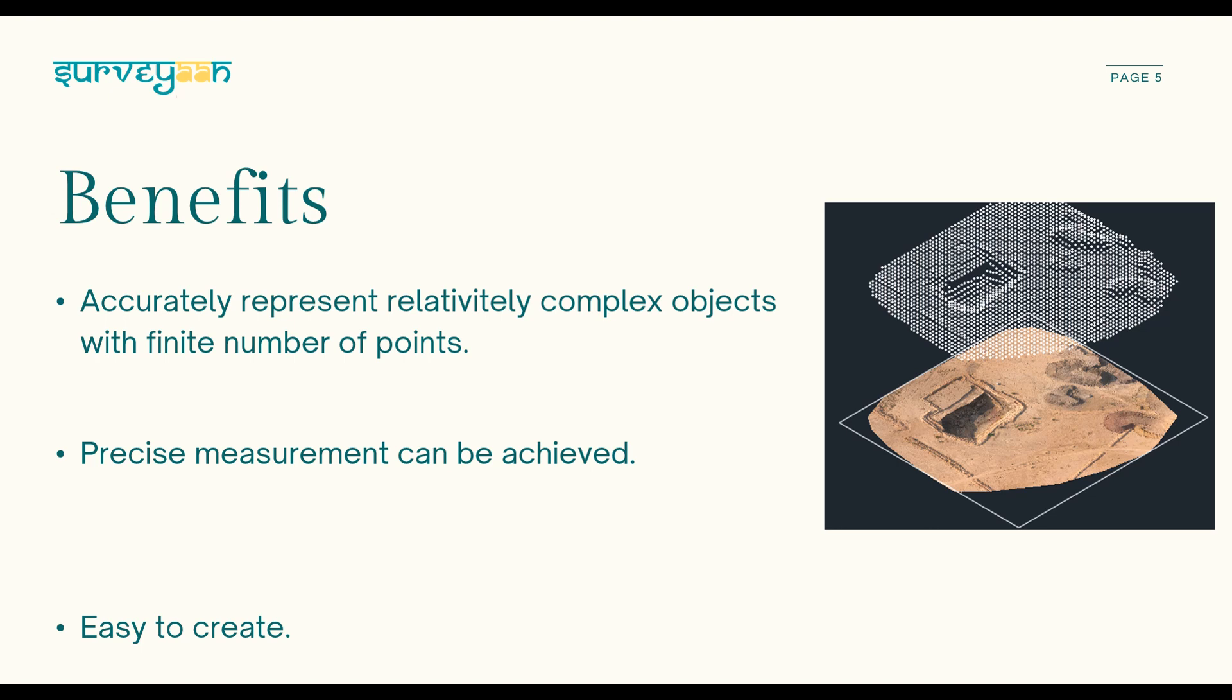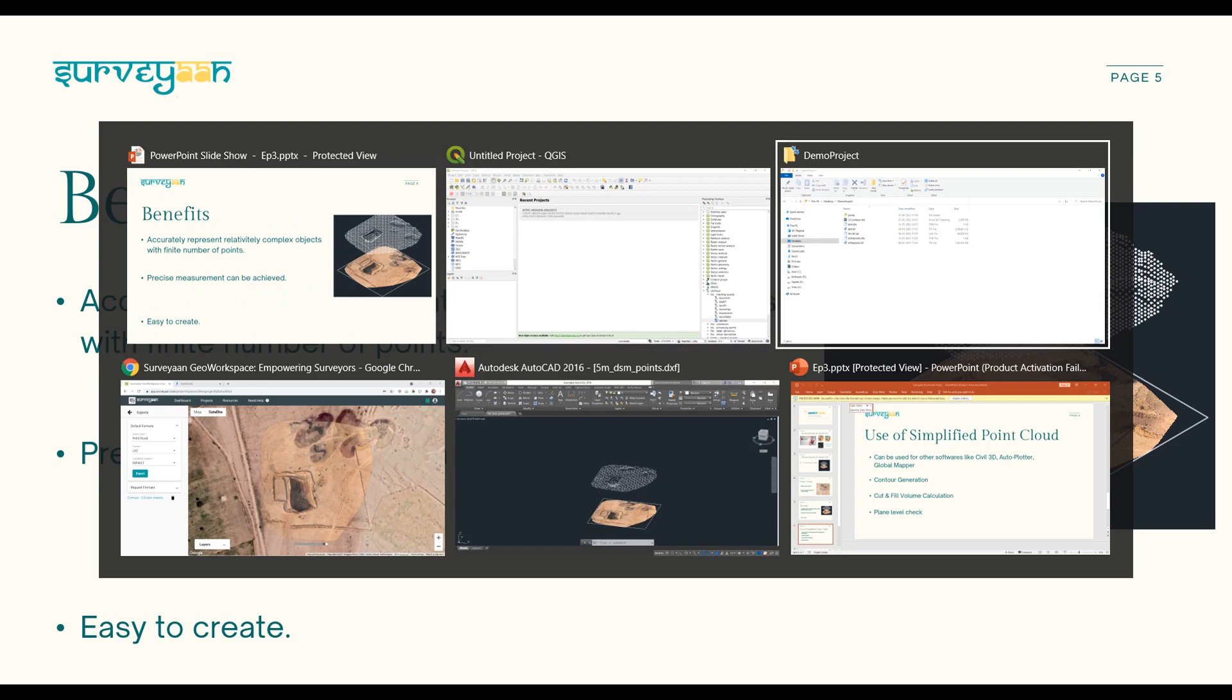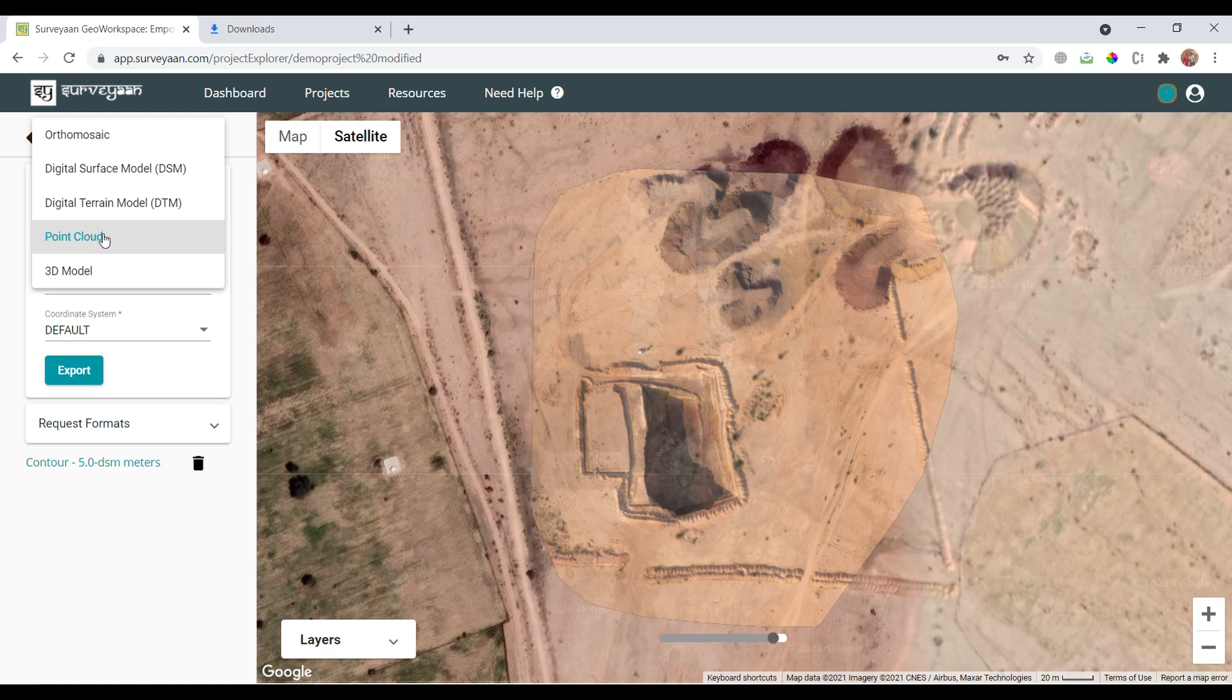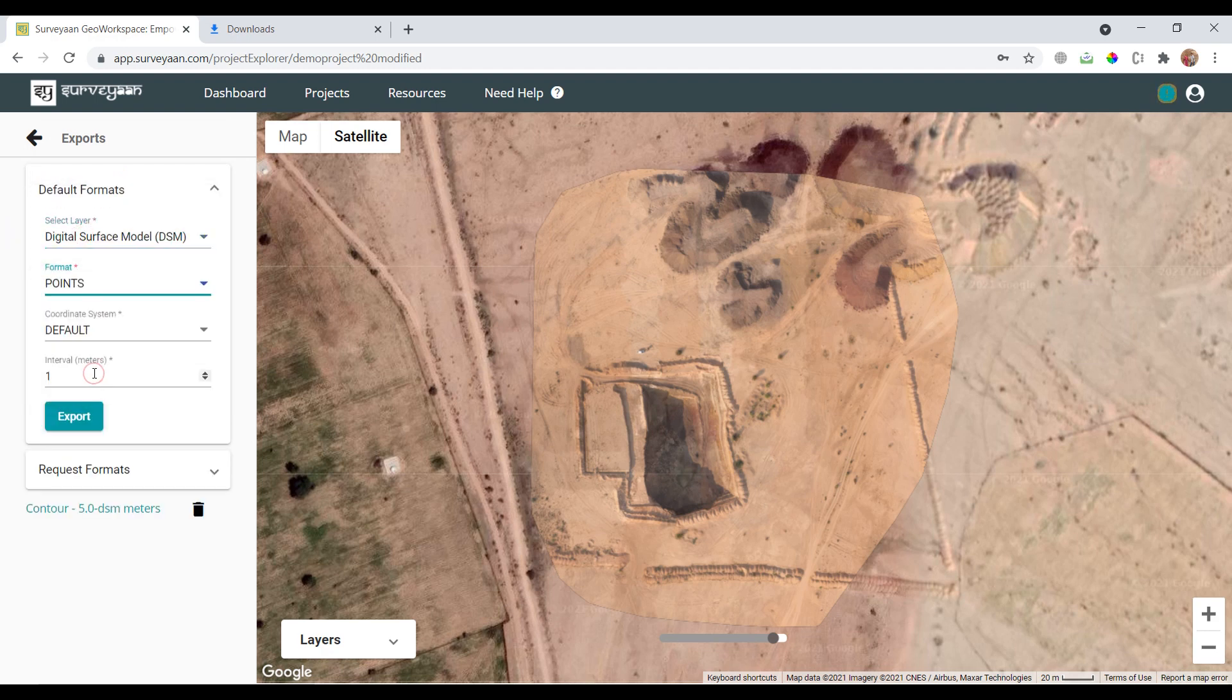Here we generate points at a distance of certain meters uniformly. So again, you go to the export section of your project in Survey On Geo Workspace. Select DTM or DSM as layer and choose the interval of your choice. For now I will select 5 meter and click on the export button. Bam! It is that easy.